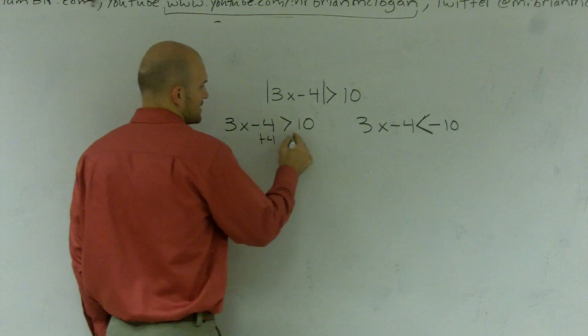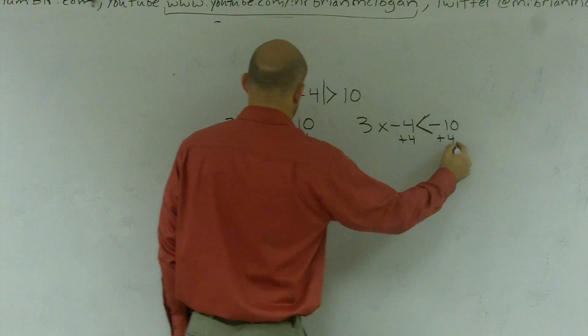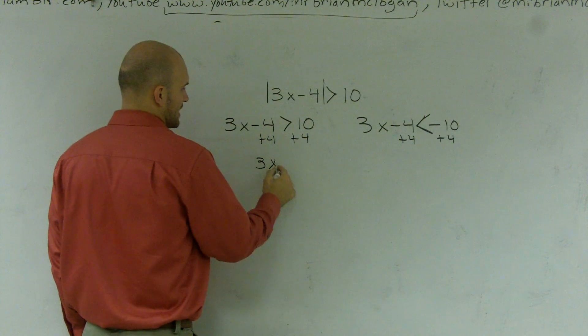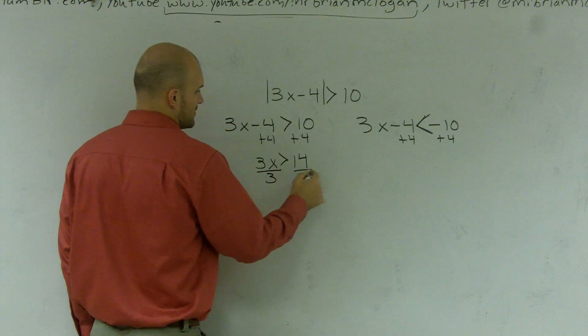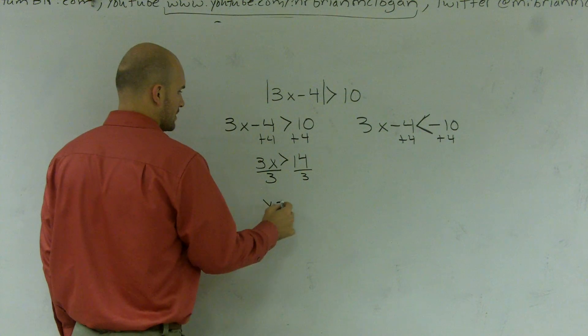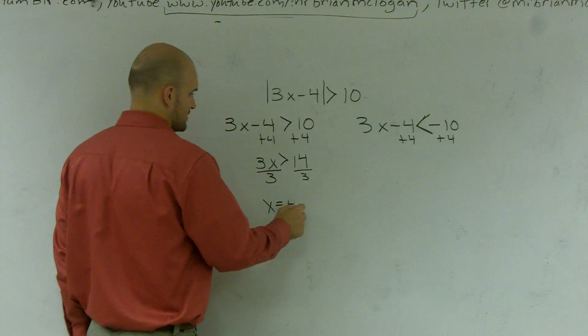So now what I can do is I'm just going to solve each inequality just like it's an equation. I'll add a 4 on both sides. Therefore, I get 3x is greater than 14 divided by 3.